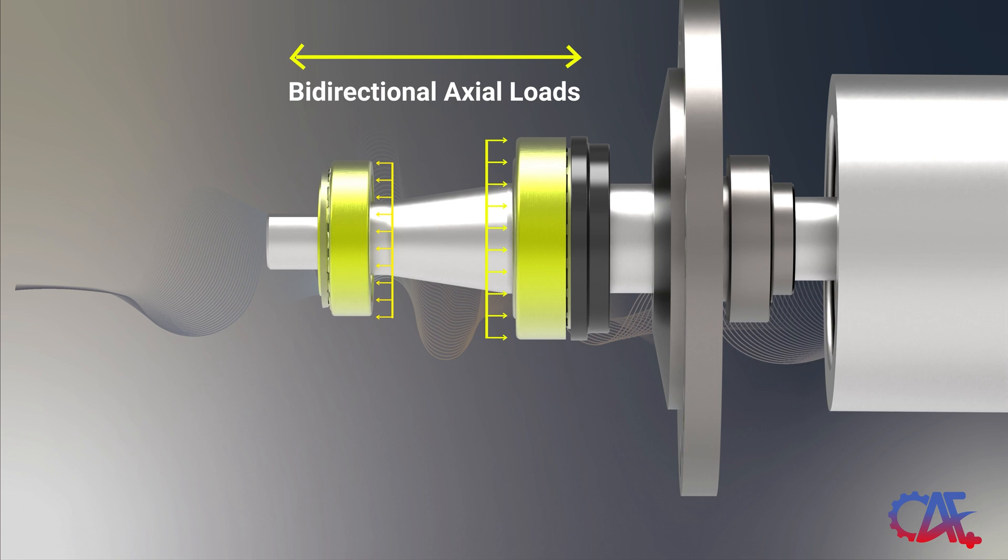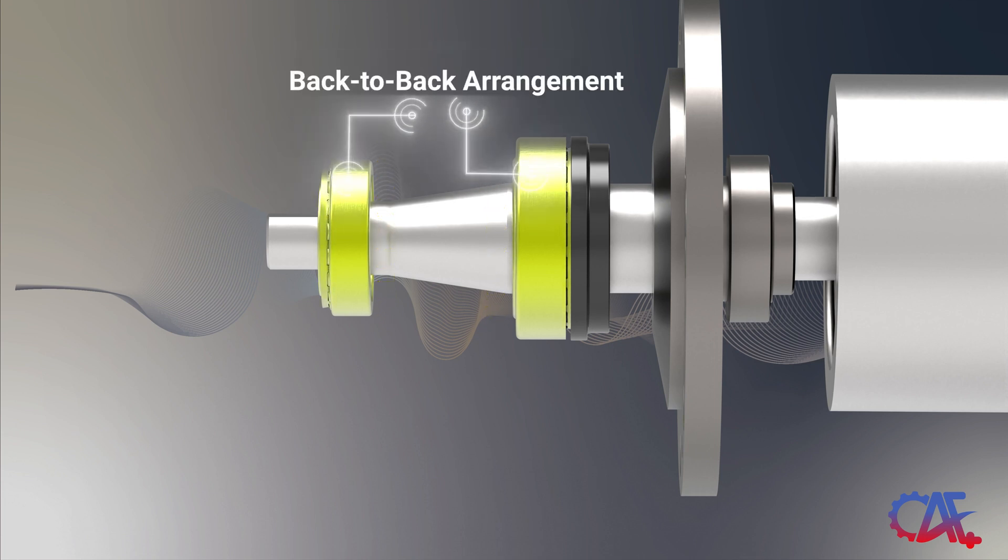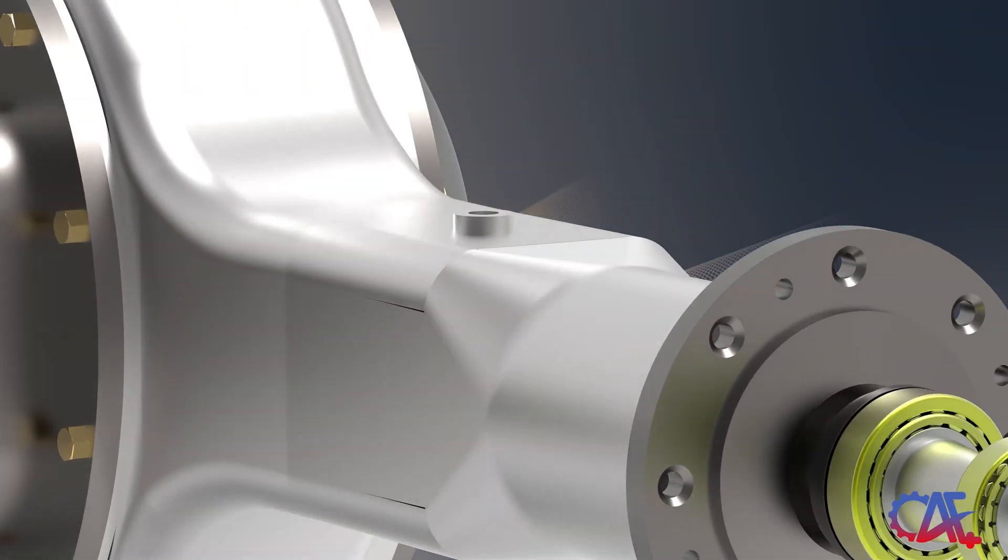To counteract the directional axial loads, it's essential to position two tapered roller bearings in a back-to-back arrangement, ensuring a robust bearing application.